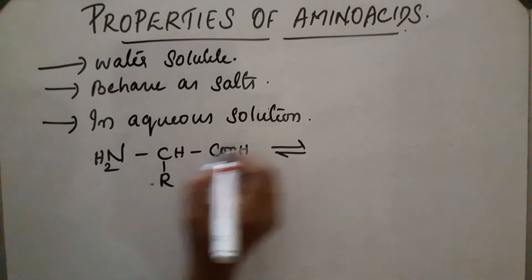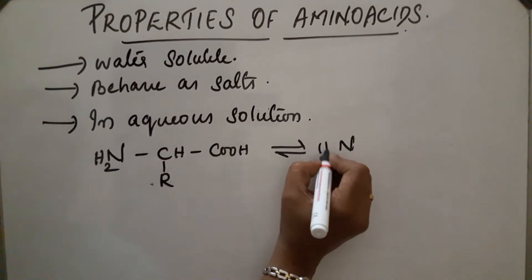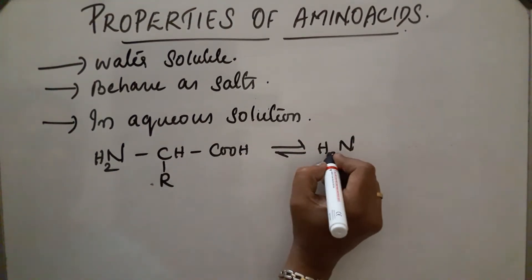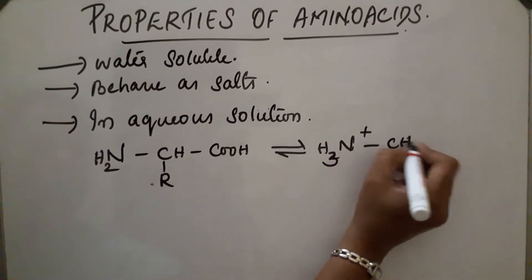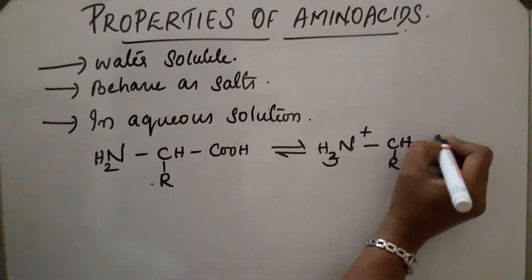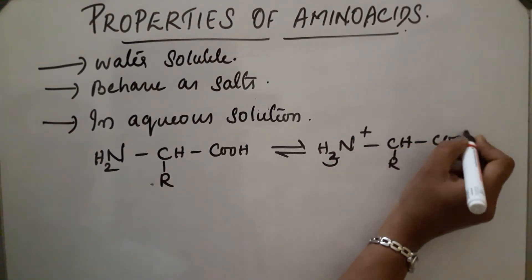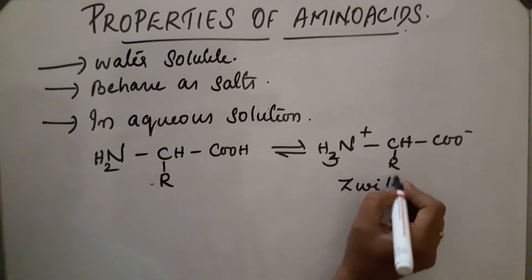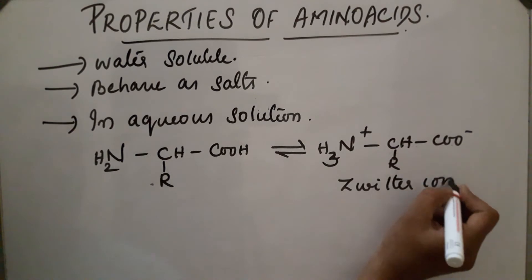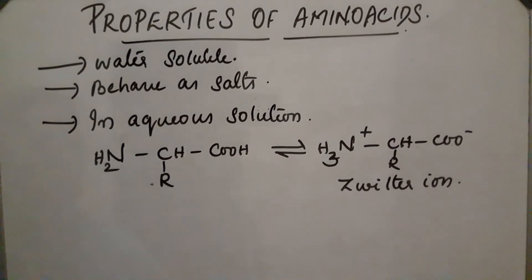The acid group loses one proton and NH2 accepts those protons, so the ion will be like this. This is a dipolar ion called a zwitterion. This zwitterion is neutral, but it contains both positive and negative ions.